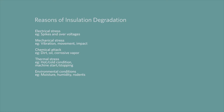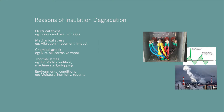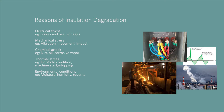Reasons of insulation degradation: Electrical stress — for example, spikes and over-voltages. Mechanical stress — for example, vibration, movement, impact. Chemical attack — for example, dirt, oil, corrosive vapor. Thermal stress — for example, hot and cold conditions, machine start and stopping.